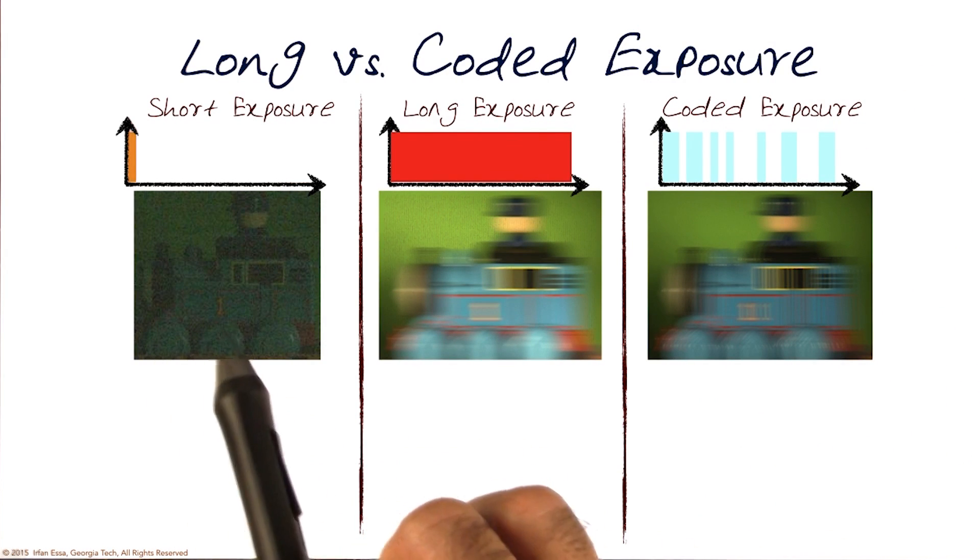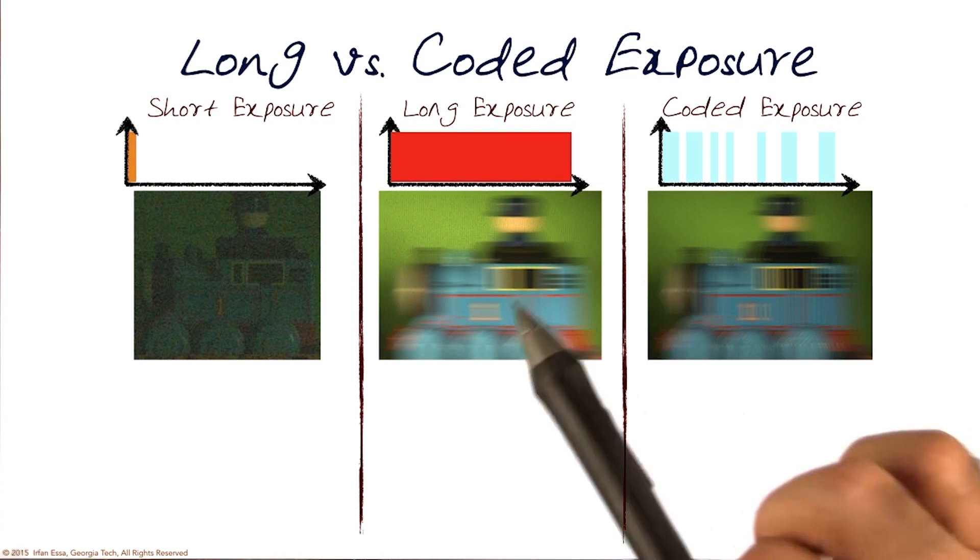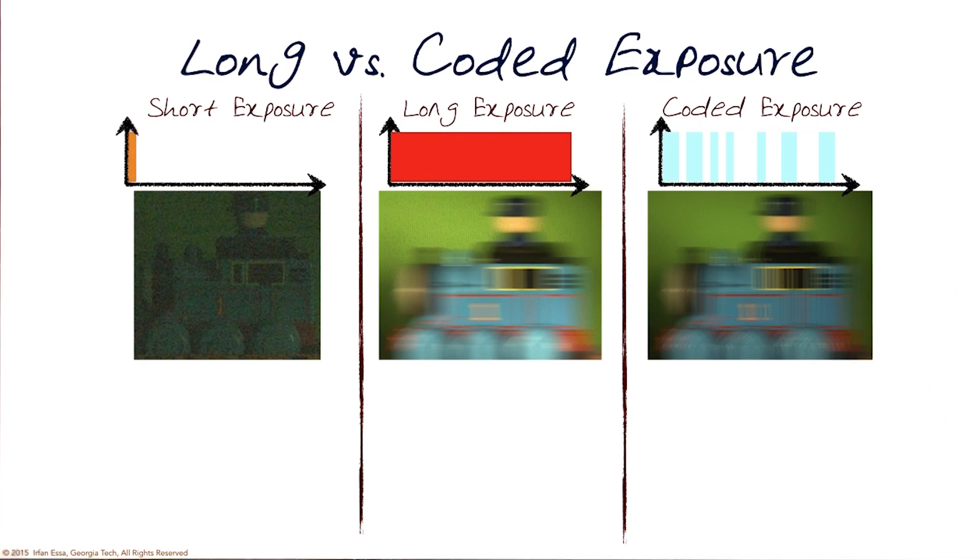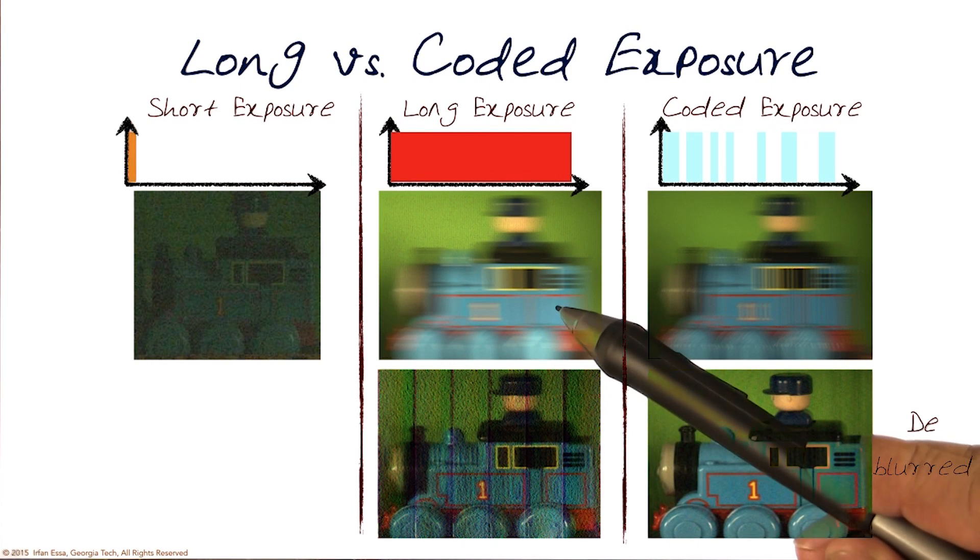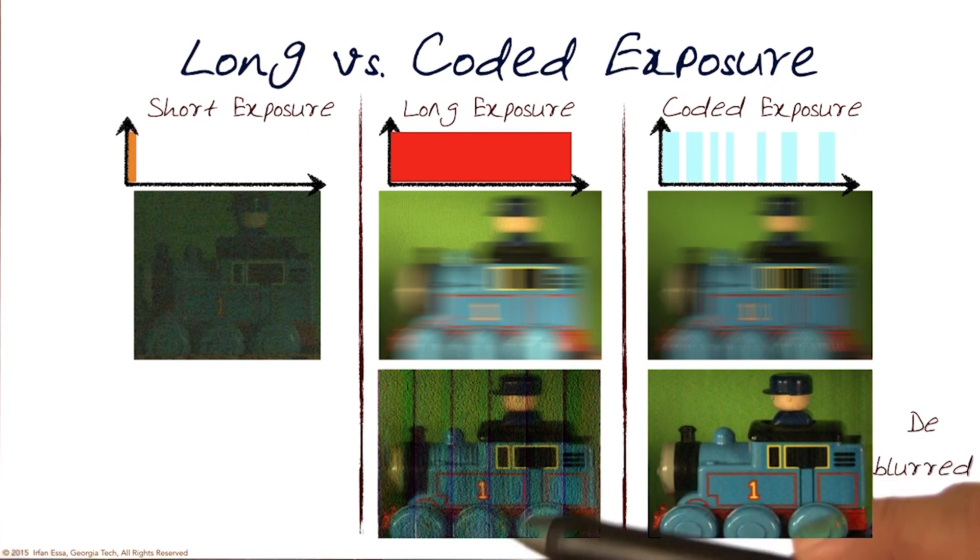For a short exposure, no light. We get a very thin but nice crisp image. Long exposure, we get a lot of blurriness. Coded exposure, we get blurriness but a lot more high frequency information still there. We can de-blur this using the approach I talked about. This is what we would get, much crisper image. If you were to de-blur this with a variety of different approaches, we might still get some incompleteness.